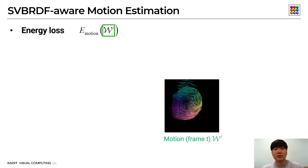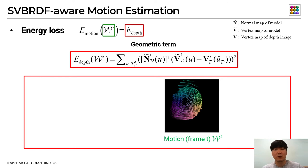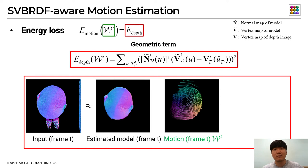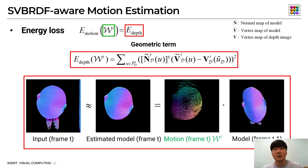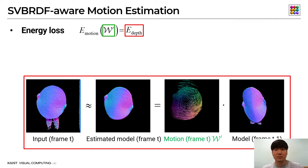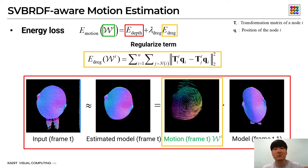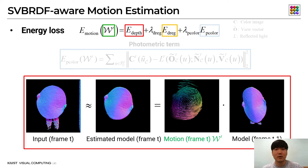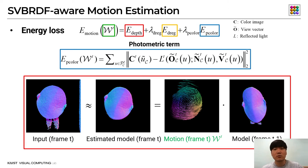Using the deformation graph, we first estimate the SVBRDF-aware motion parameters of each deformation graph node that minimize the following energy loss term. The first term is the geometric data loss, which minimizes the point-plane distance between the input frames and the estimated model at corresponding pixels. The estimated geometry at the current frame is formulated by employing the motion parameters with the geometry model at the previous frame. To prevent the motion field from overfitting to noisy depth input, we add a smoothness constraint as a regularization term. Our final term is the photometric data loss, which constrains the motion parameters to make the appearance of the estimated model consistent with the input color observation.